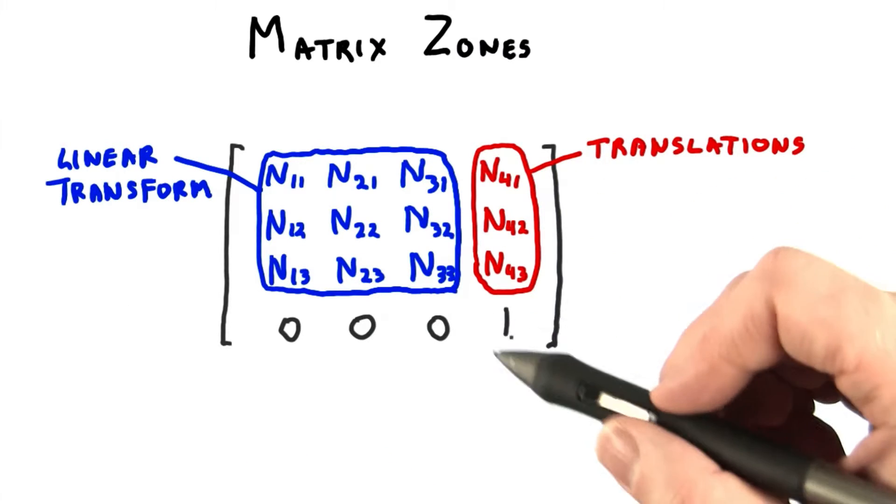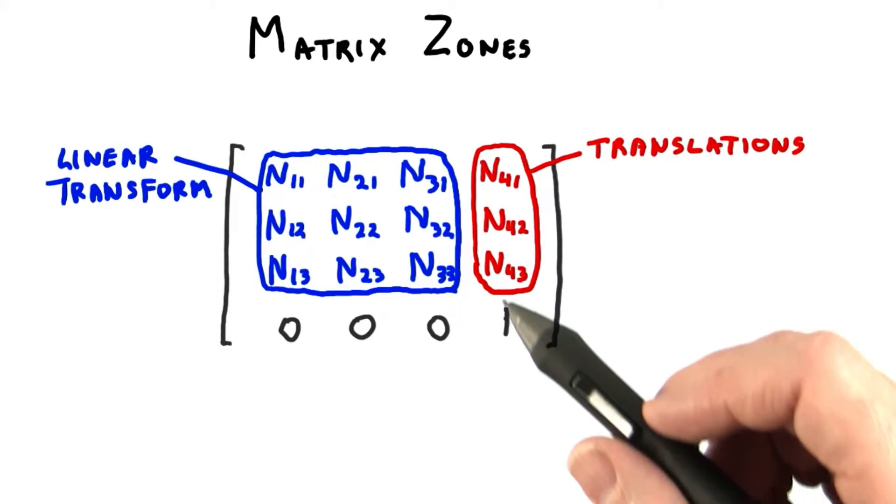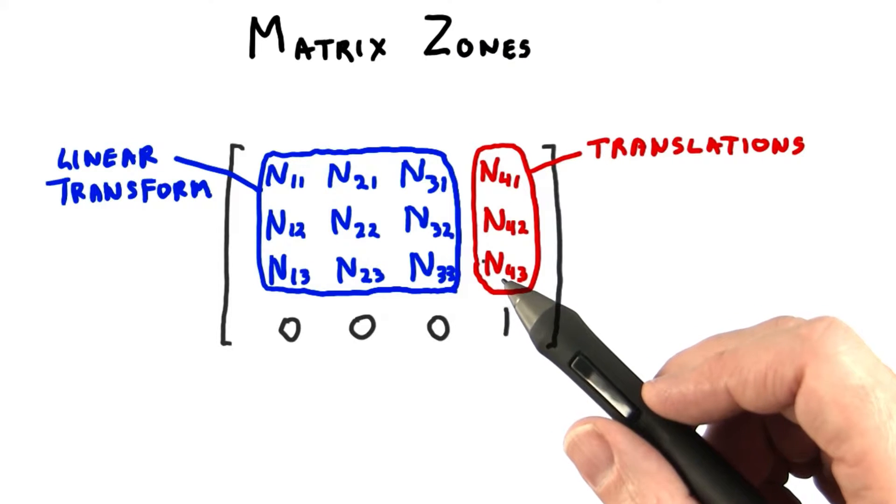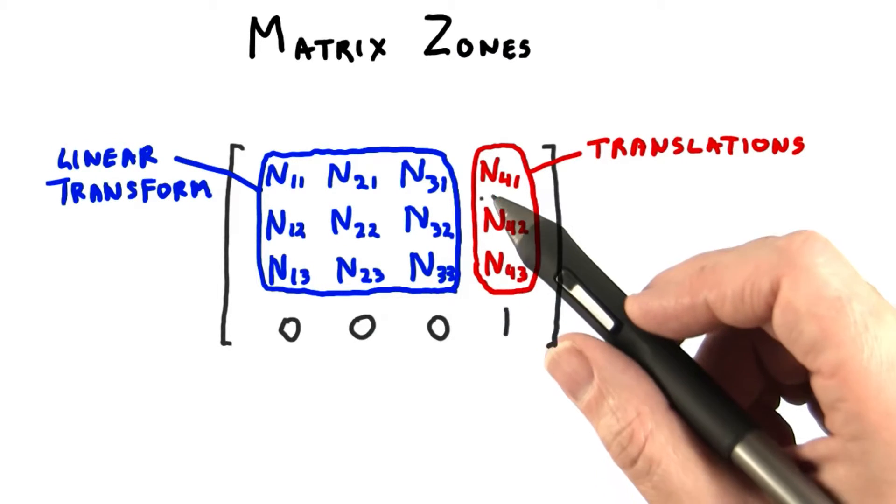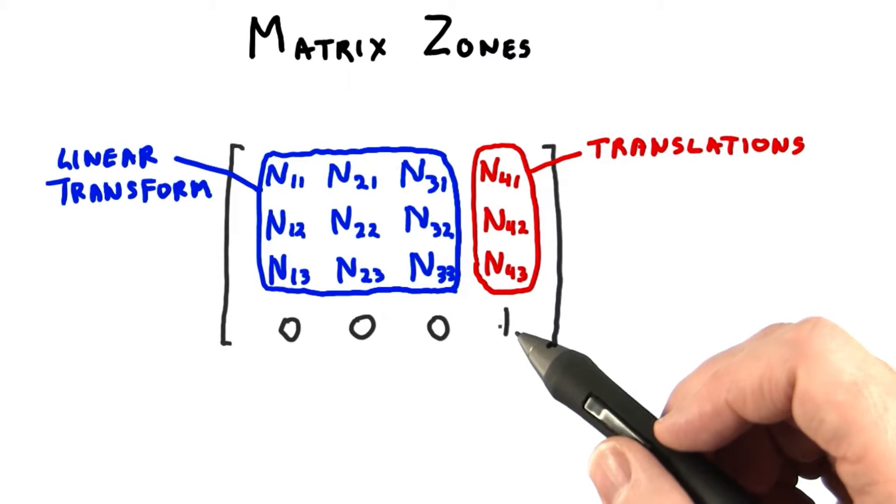The upper right is where the translations accumulate. These translation values will get affected by multiplication with other matrices, of course. Translations only affect points since vectors have 0 for their fourth coordinate.